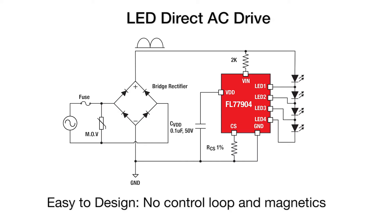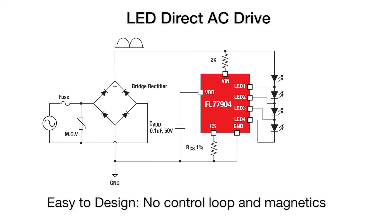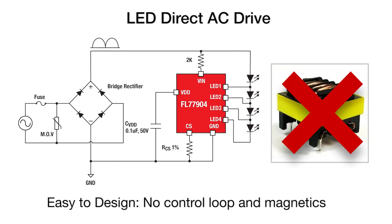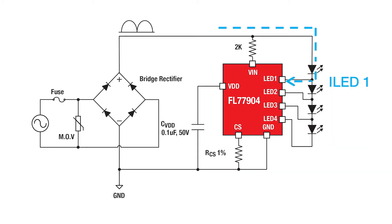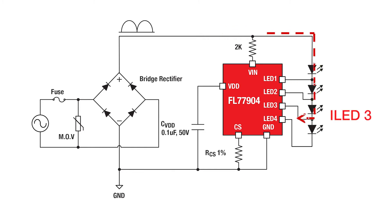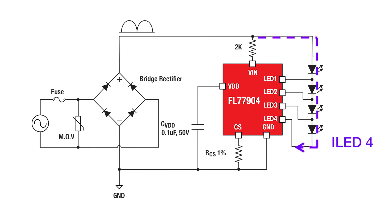Fairchild's compact LED direct AC driver provides for ease of design. What makes this easy is that there is no control loop to design and stabilize, and it does not need a magnetics expert to design the solution. The product operates very simply — it has tightly regulated current sources that are alternately turned on as the AC line voltage increases from zero to max voltage.